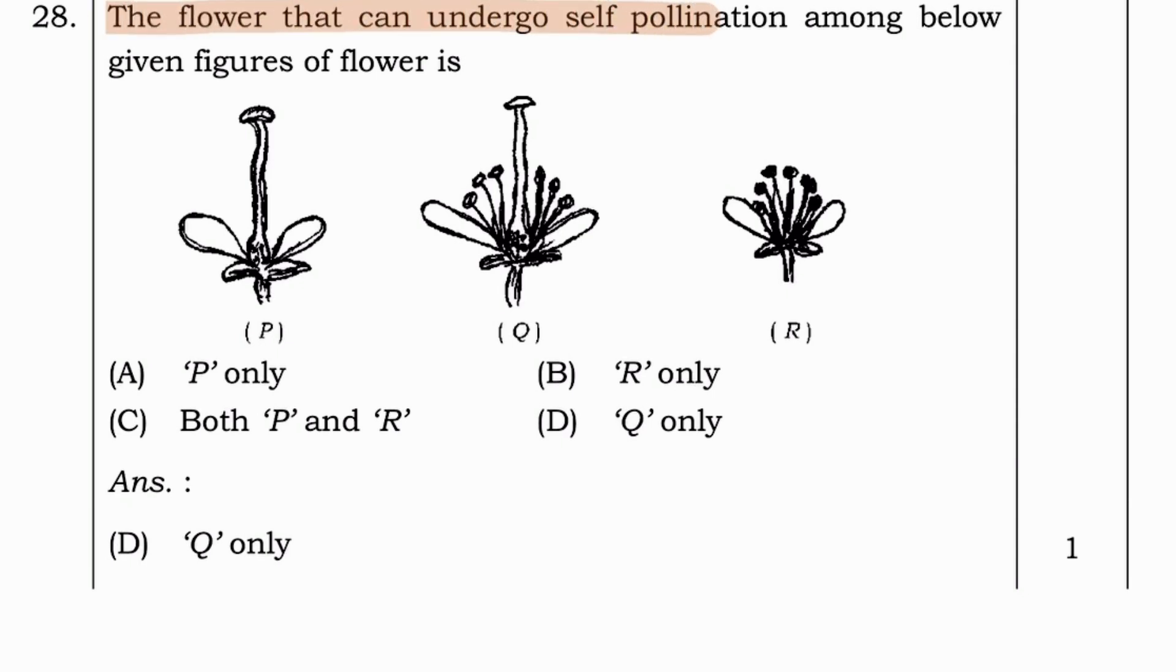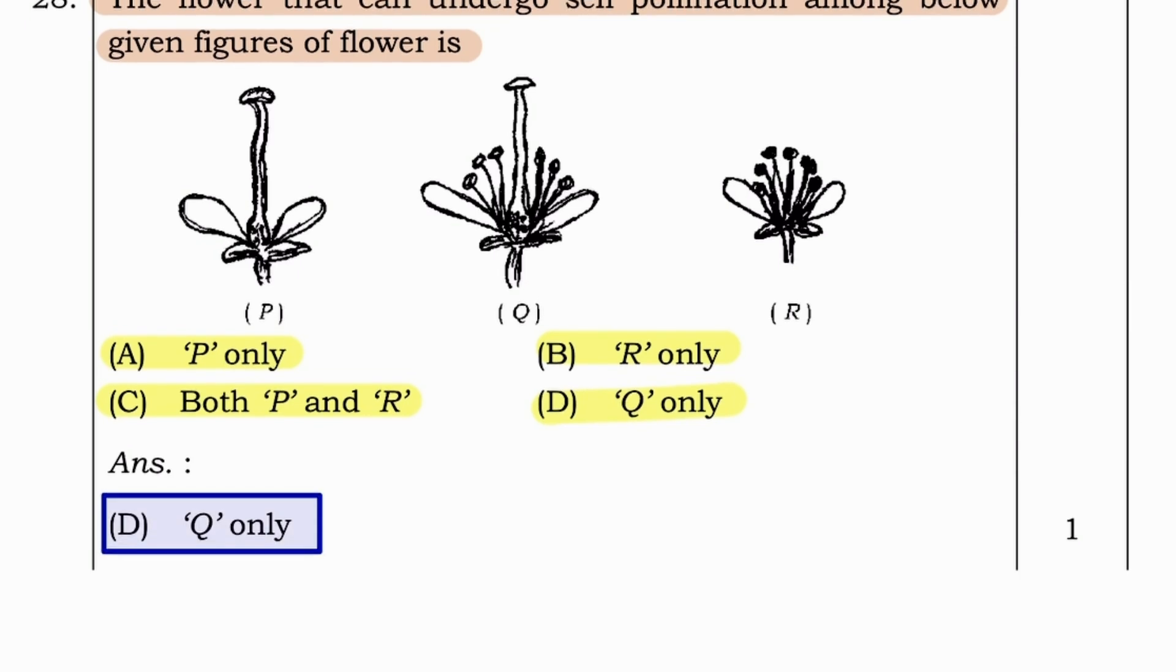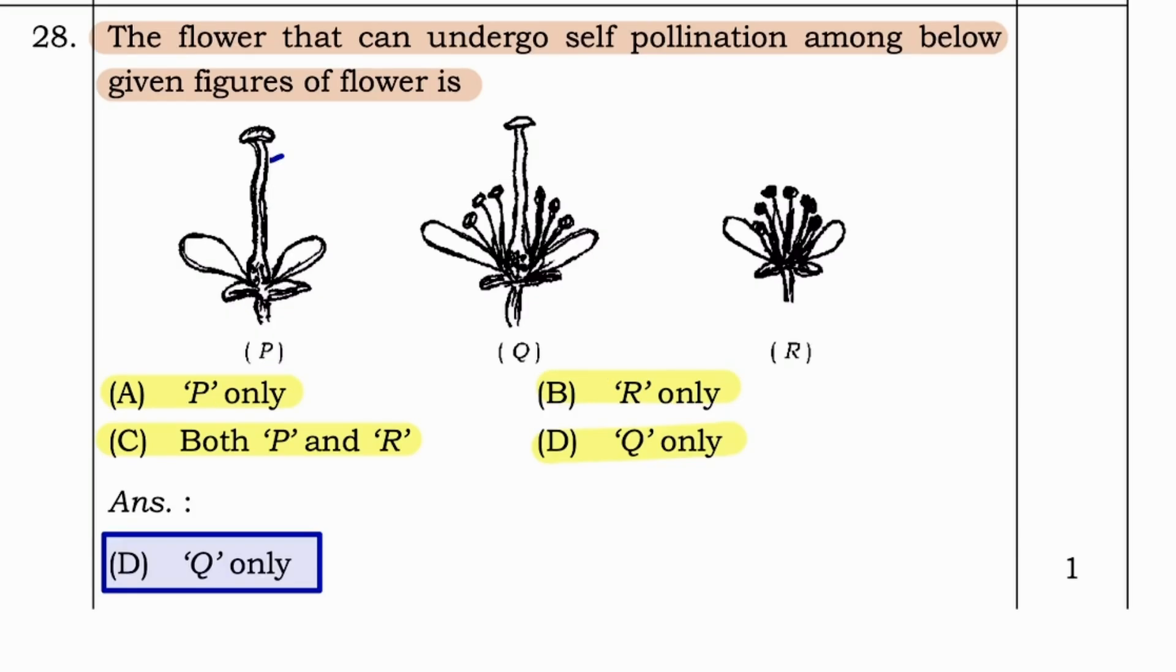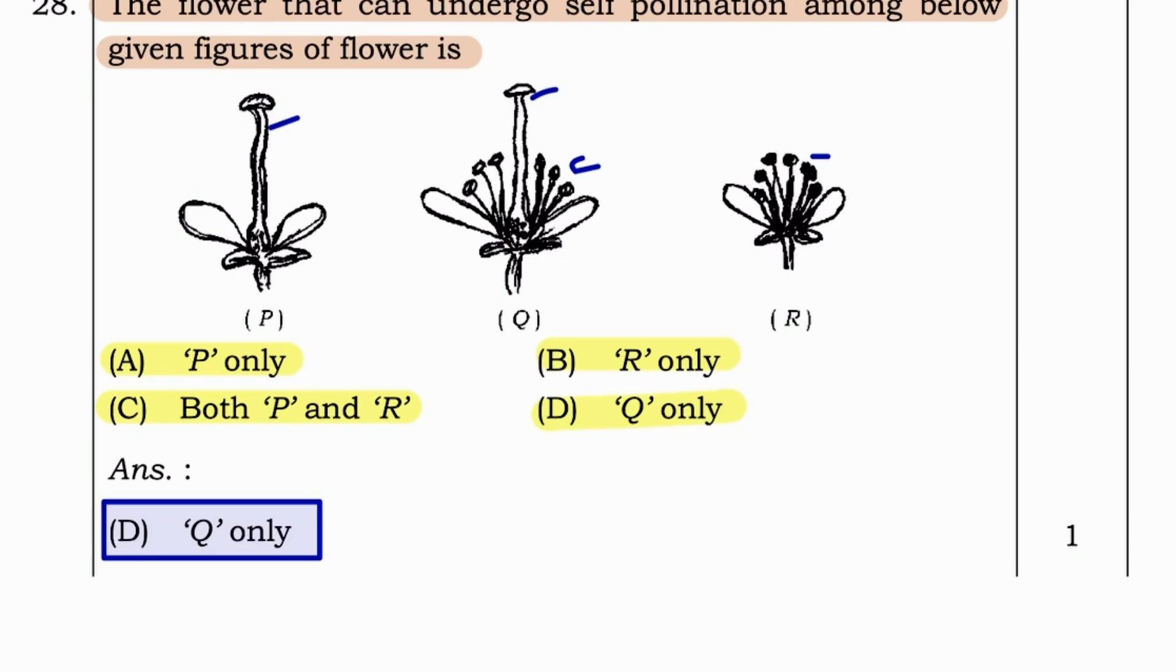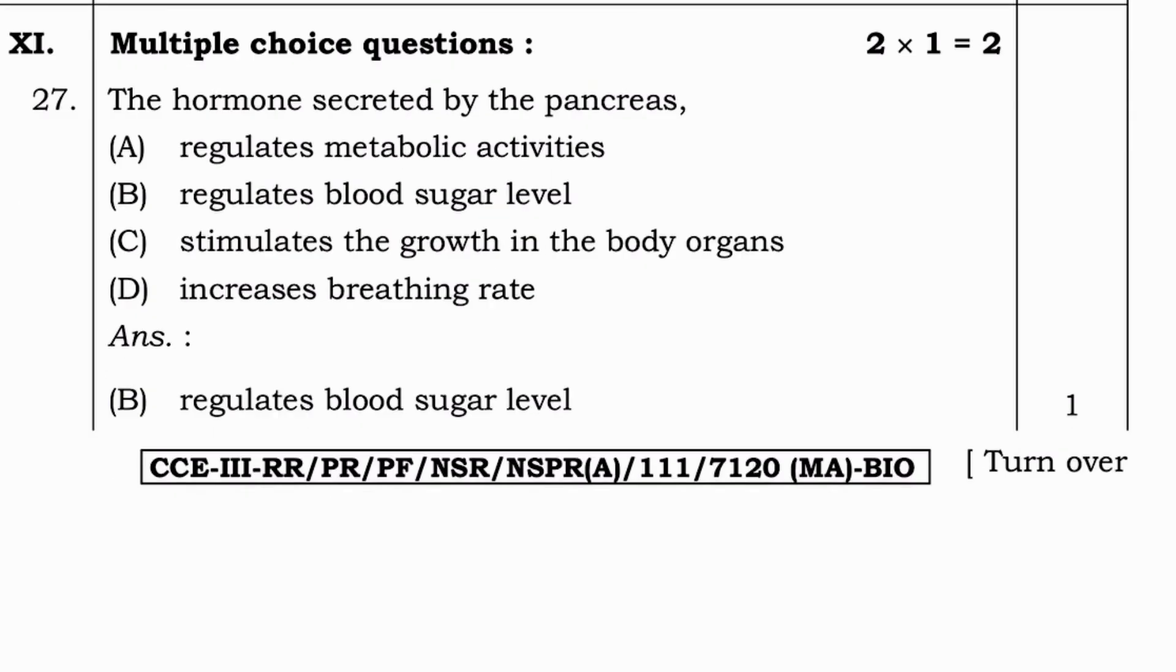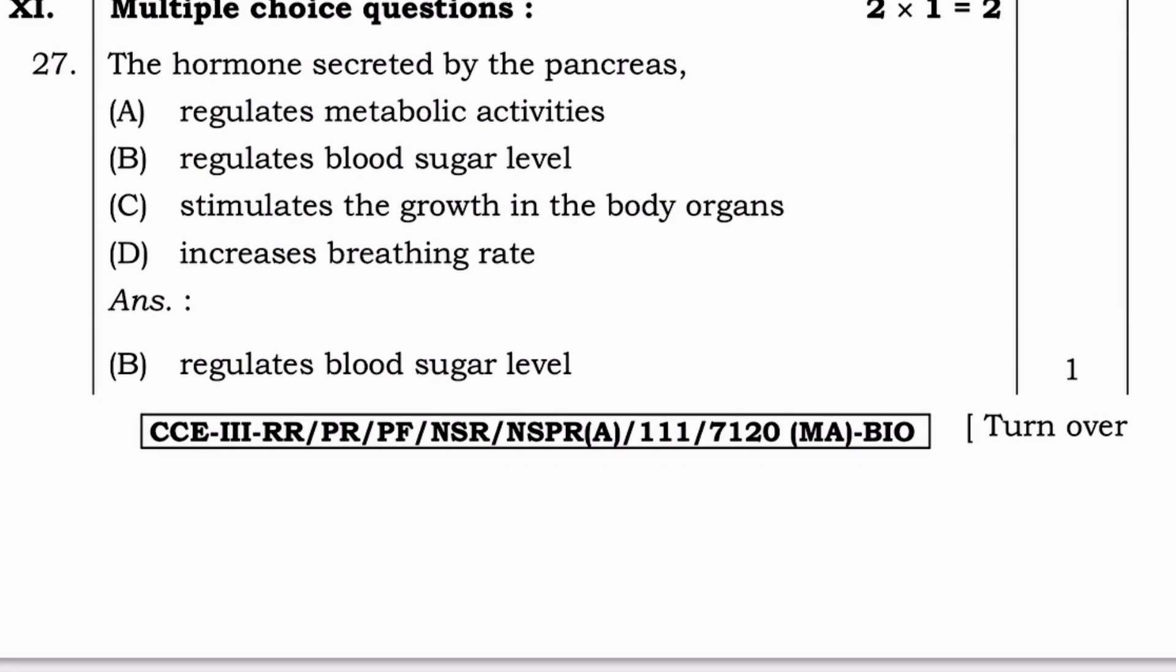Next question. The flower that can undergo self pollination among below given figures of flower is P only, R only, both P and R, or Q. Here answer is option D, Q only. And I think you all know the reason. Here I am simply marking without any explanation.